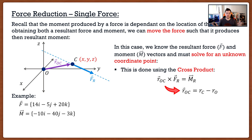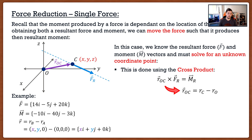Let's say from the previous slide I find my resultant force to be 14i − 5j + 20k, and my resultant moment to be −10i − 40j − 3k. This just came from taking all the separate forces and adding them, and all the separate moments and adding them. The question becomes: where can I move this force such that it creates this moment? The question says to find the point, and that our unknown coordinate point has to be in the xy-plane. So we know that coordinate point will have an x component, a y component, and z = 0. That gives us two unknowns: x and y.